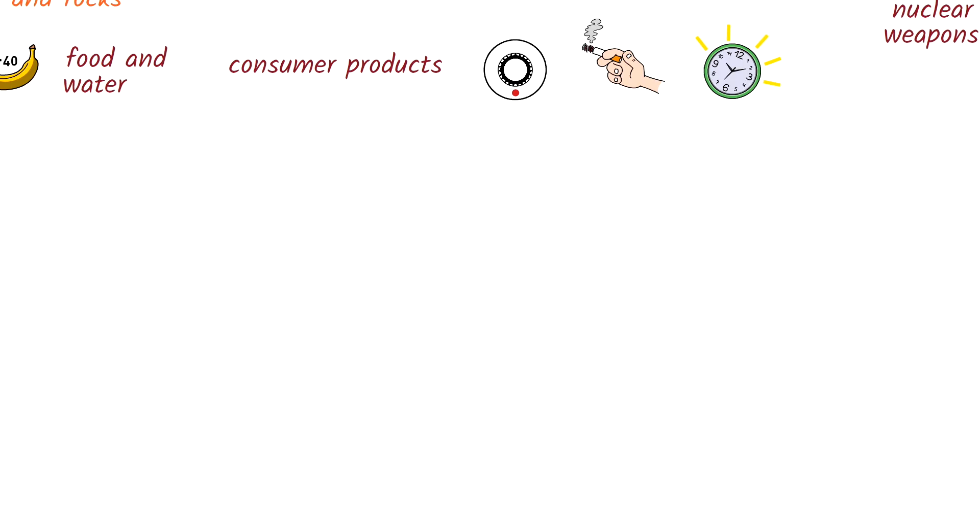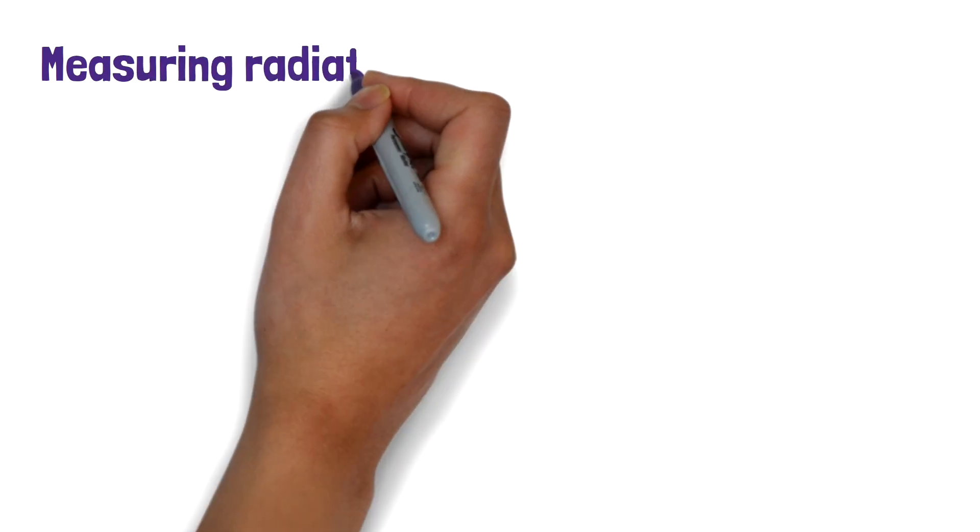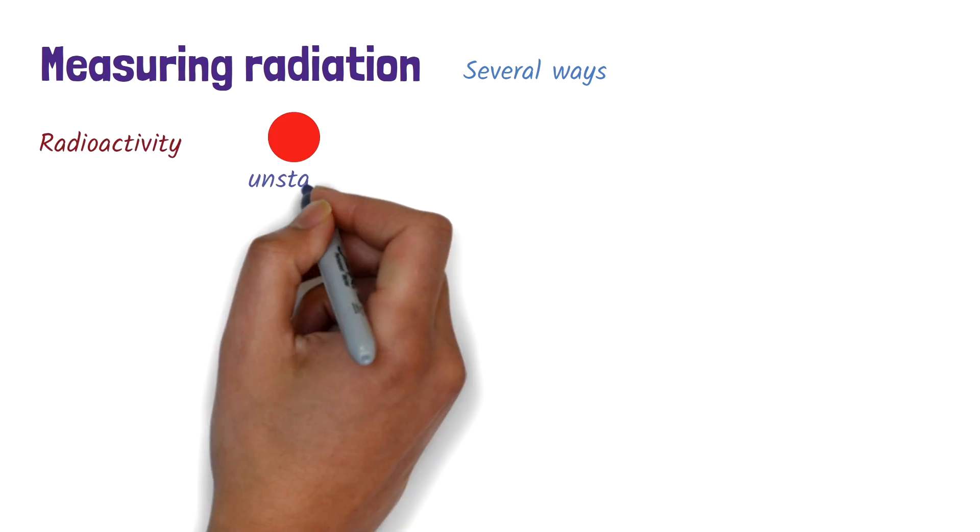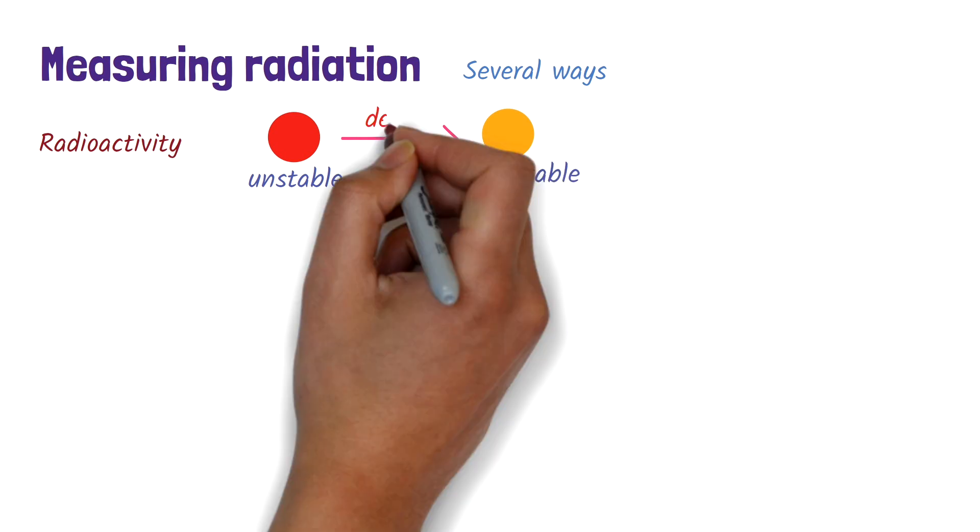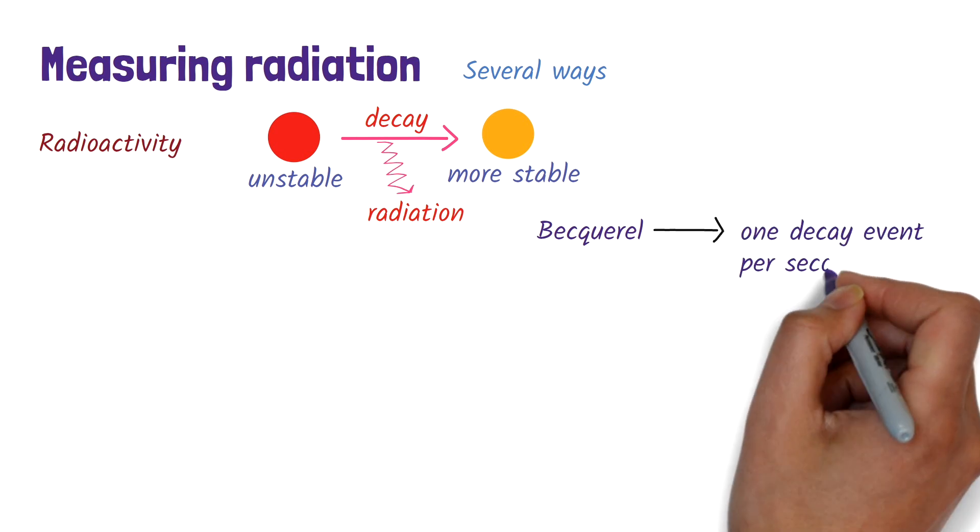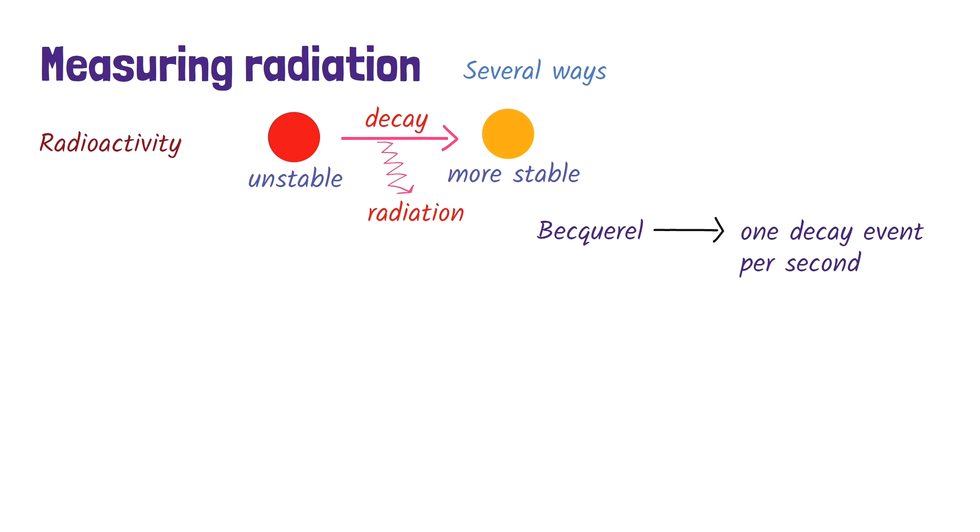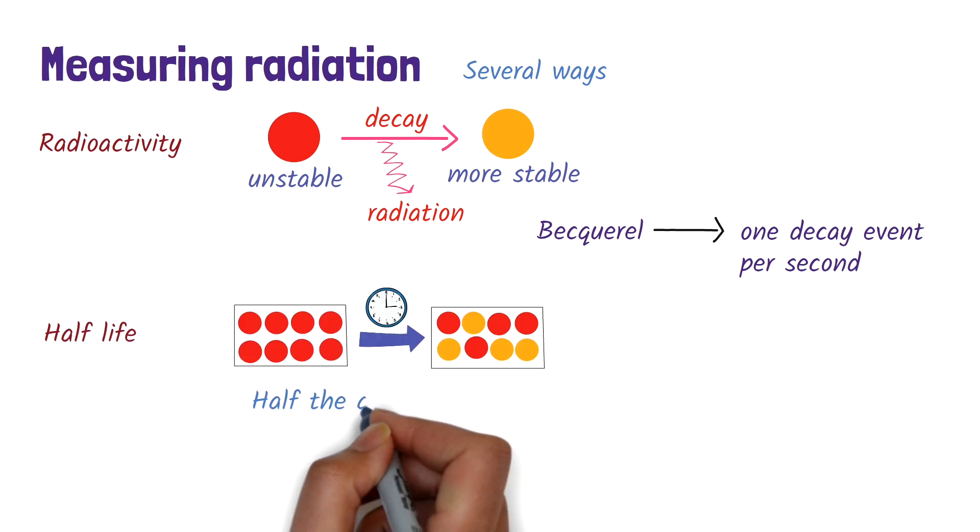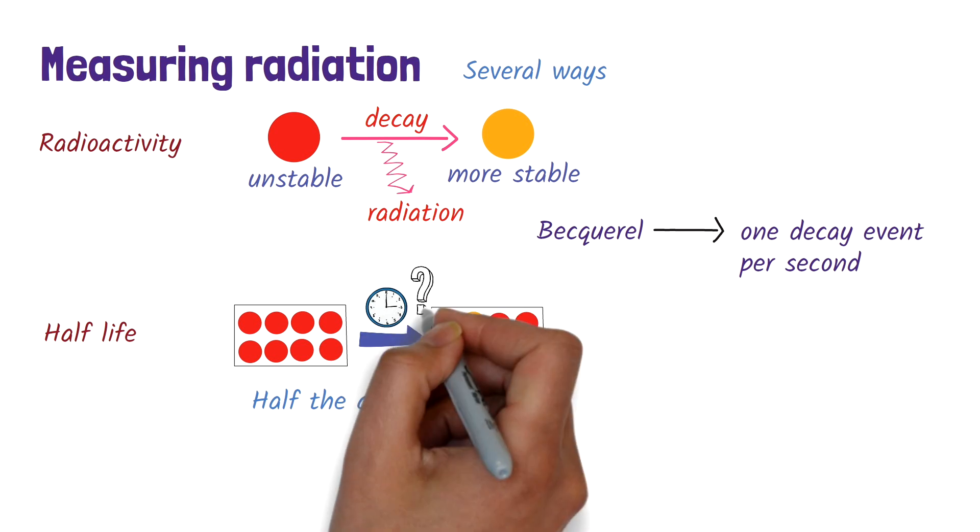Now let's take a look at how we measure radiation. Radiation can be measured in several ways, depending on what exactly we're trying to assess. Radioactivity is the release of energy as radiation from an unstable atom as it decays into a more stable form. It's measured in becquerels, where one becquerel equals one decay event per second. Each radioactive material also has a half-life. That's the time it takes for half of the atoms in a sample to decay. This helps us understand how long a material will remain hazardous.